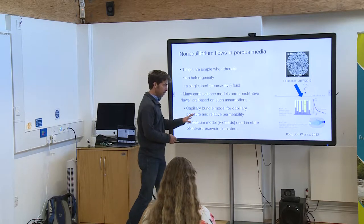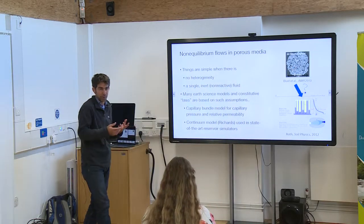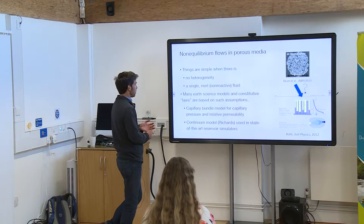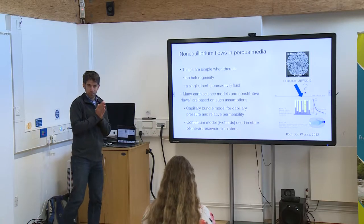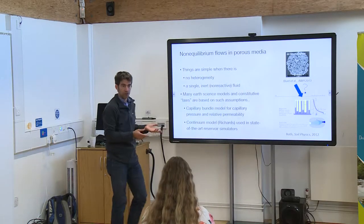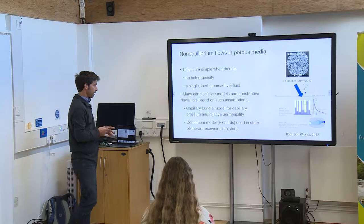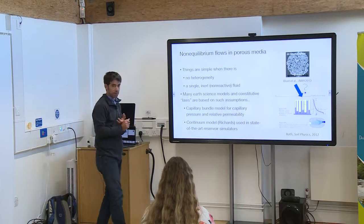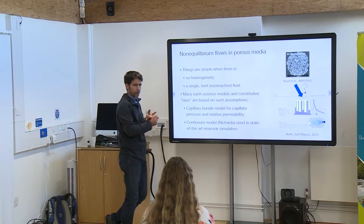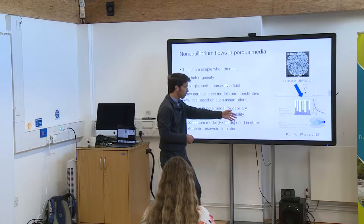One source of complexity is the geometry — this is a typical carbonate, and the flow geometry is really complex. Then you have the phenomena: capillarity, geochemistry, geomechanics. If you had a simple geometry like a pipe with no heterogeneity and a single inert fluid, the problem would be really simple. And it sounds ridiculous, but I emphasize that many of the models we use today in earth sciences, and the constitutive laws like capillary pressure-saturation and relative permeability, are really based on this kind of assumption — the capillary bundle model.